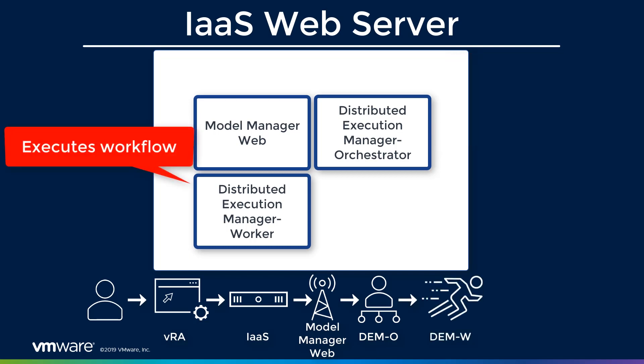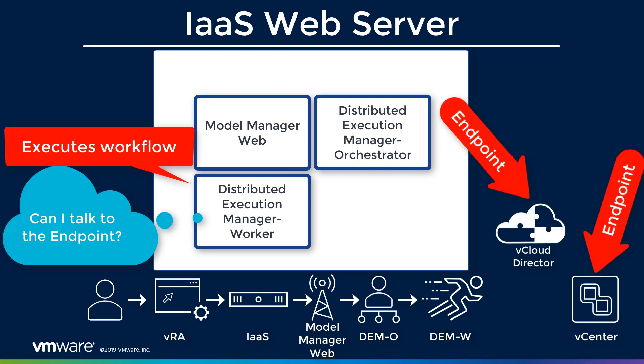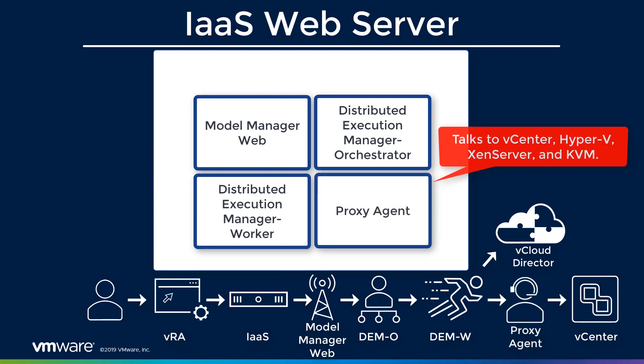Once it gets to our worker, the worker can start executing it. Where the virtual machine is requested to be deployed determines how the worker handles it. We have endpoints — an endpoint is where the virtual machine is ultimately going to be deployed. If our endpoint is vCloud Director, our DEM worker knows exactly how to talk to vCloud Director and can start executing that workflow. But if it's vCenter, the DEM worker doesn't know how to talk to the vCenter endpoint, so it would pass off the workflow to a proxy agent that knows how to talk to vCenter.